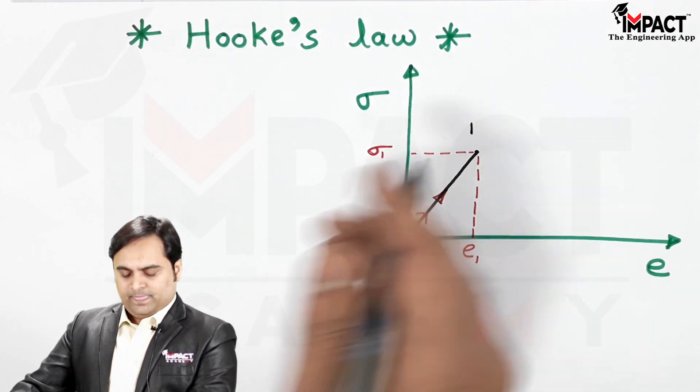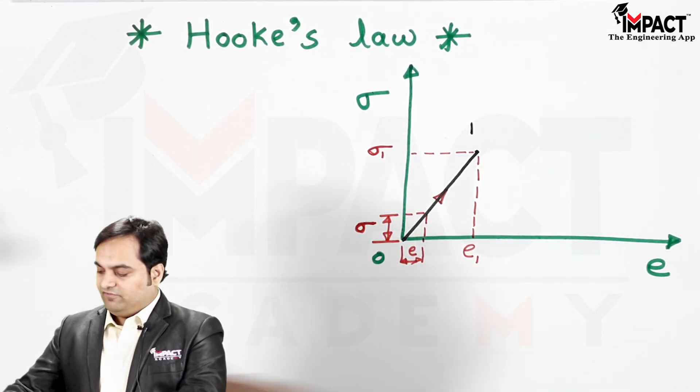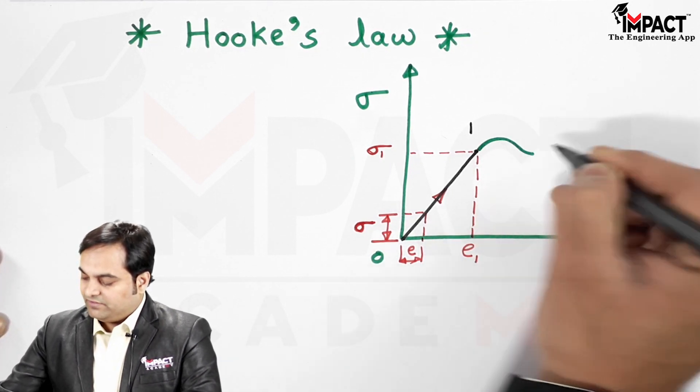Beyond point 1, the behavior of the graph is in the form of a curve.